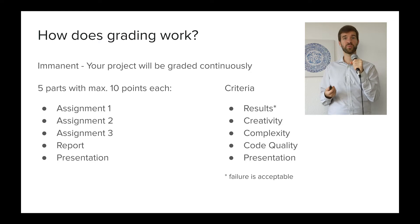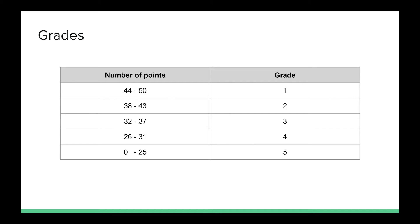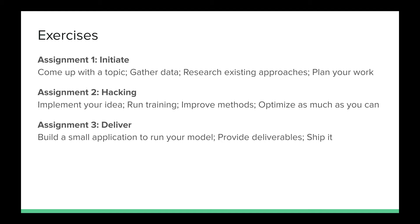The grade scale is fairly standard: you need at least 26 points to pass, and the rest follows a standard scale. For the first assignment, you will initiate your project: come up with a topic, gather data, research existing approaches, and plan your work. This will be due quite soon, so make sure you quickly research the project you want to work on. It's a shorter assignment, but really important that you properly research what you want to do and how you want to do it.